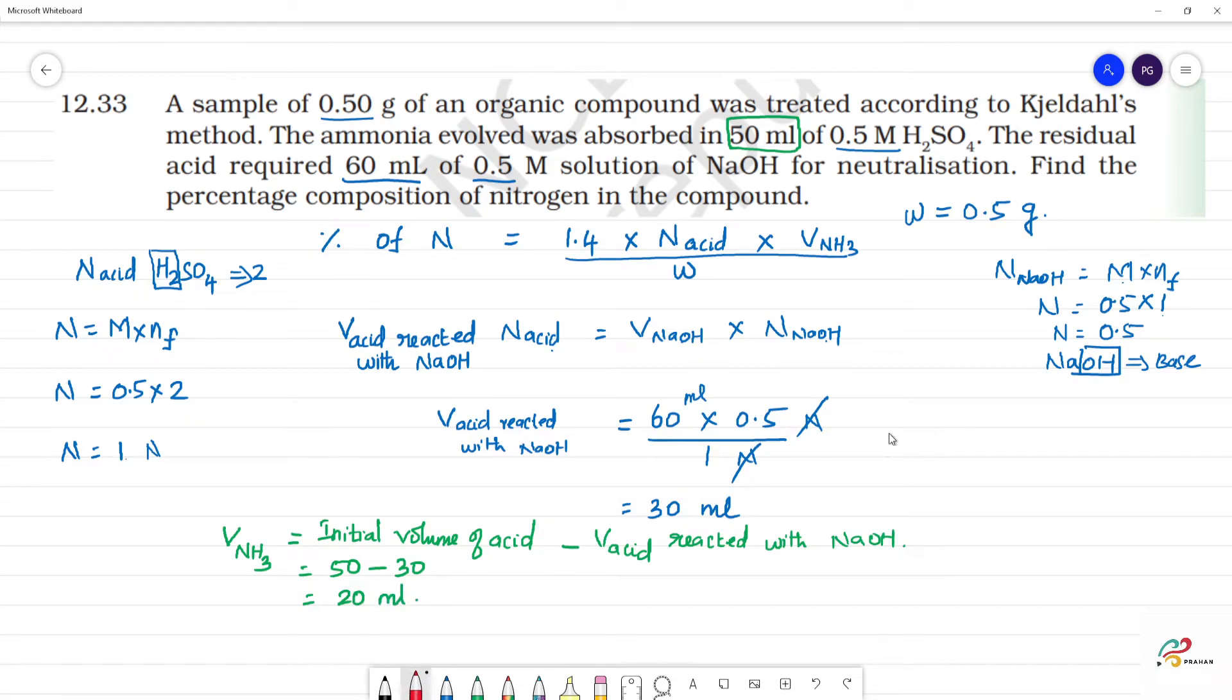Now, percentage of nitrogen. Last, percentage of nitrogen is equal to 1.4 into normality of acid 1 into volume of NH3, so this is equal to 20, divided by sample of 0.5. So we calculate, it is 56 percentage.